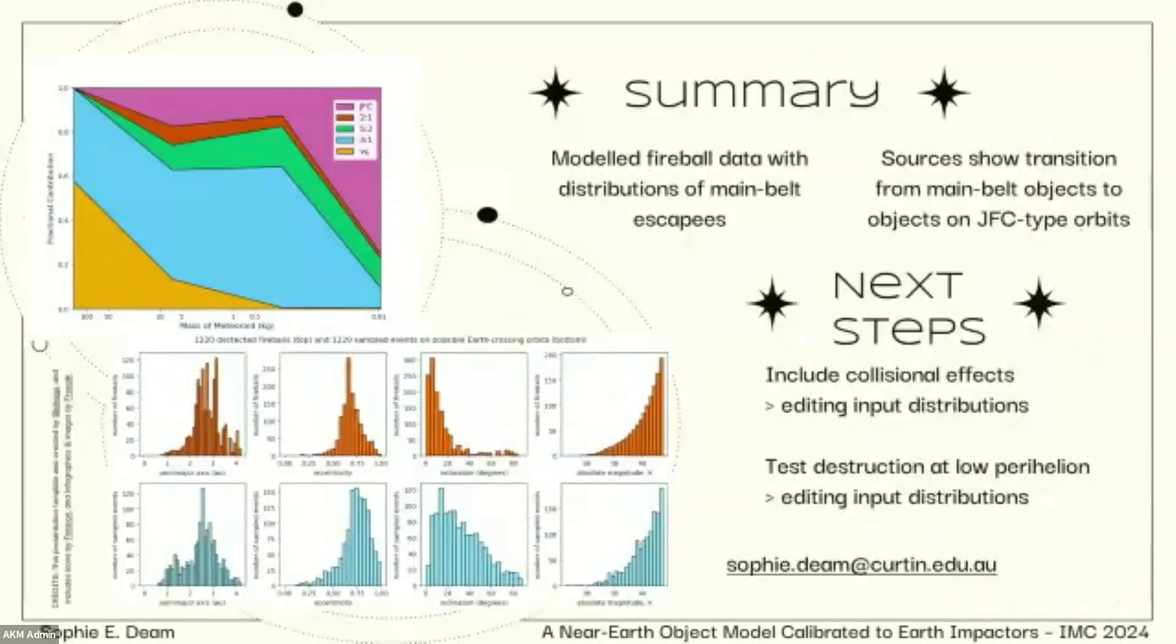So in summary, just trying to model the fireball data with distributions from main belt escapees. And sources show the sort of transition from maybe main belt stuff to Jupiter family comet type orbits. And the next steps are to include more physical things like collisional effects and just testing maybe destruction at low perihelion. And these are all to do with editing the input distributions. So there's some more work to be done. Thank you very much.